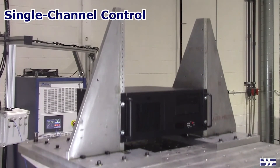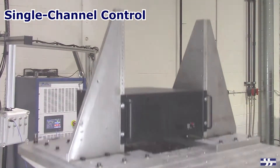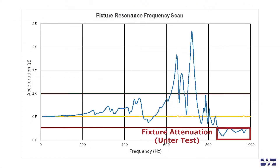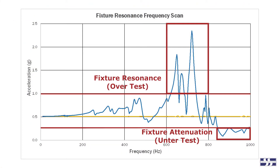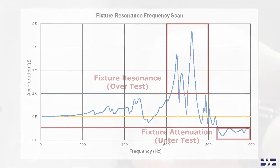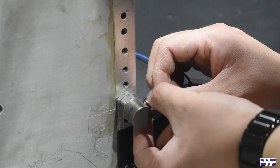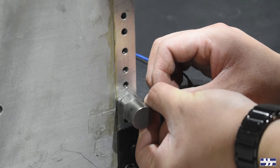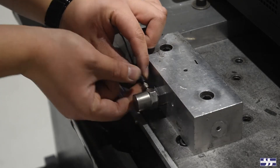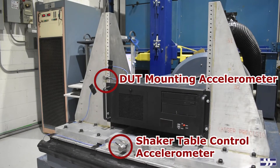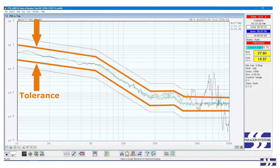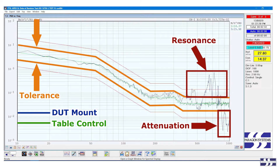If the fixture does exhibit resonances or attenuation regions within the frequency range of the test profile, these characteristics may be concealed with single-channel control. Attaching additional accelerometers to the DUT mounting points can reveal if the fixture resonances or attenuation are shifting the test profile out of tolerance at the DUT mounting points.